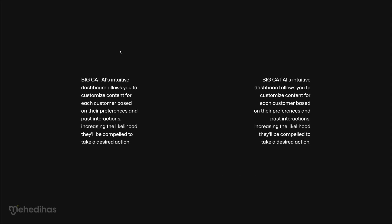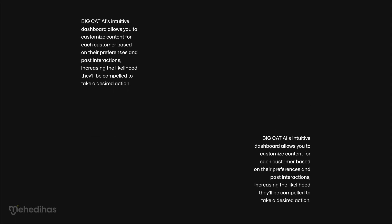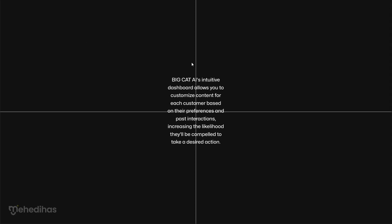Here we have typography and text. This is the left alignment and the right alignment. Here we also have the top and bottom alignment. As you can see, the vertical and horizontal can be confusing, so you can practice this as well.